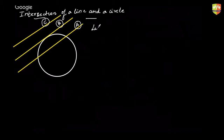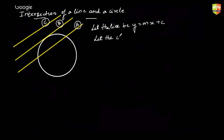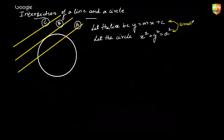So now let the equation of — I'll take a very simple case — let the line be y = mx + c, and let the circle be the standard case, having its center at the origin and radius a. In order to know the condition for A, B, and C, I will simultaneously solve the equation of this line with the circle.